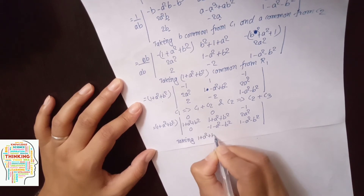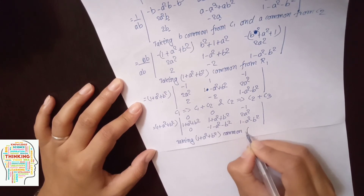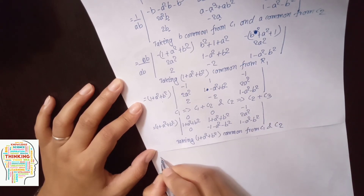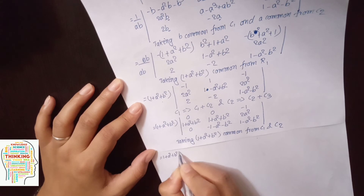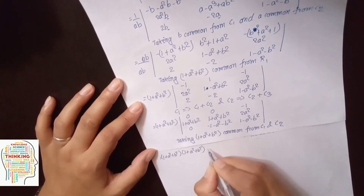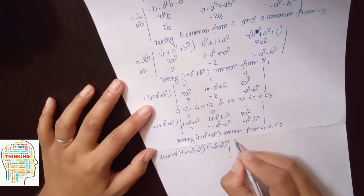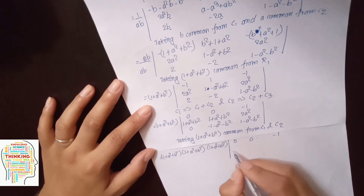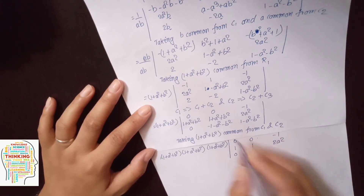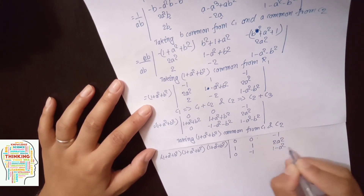Taking (1 + a² + b²) common. From C1 and C2 you got here (1 + a² + b²) and you feel (1 + a² + b²), (1 + a² + b²) — and back here: zero, zero, minus one.